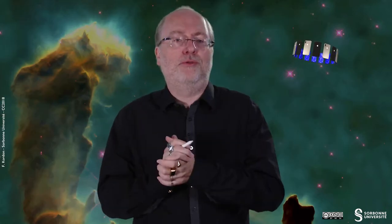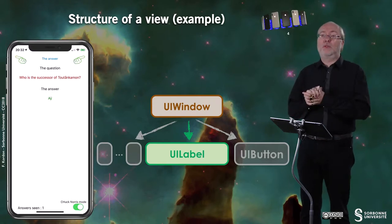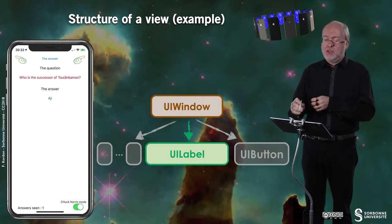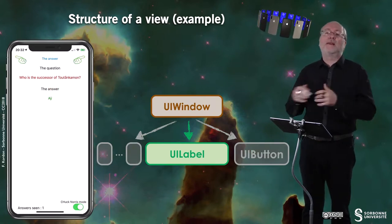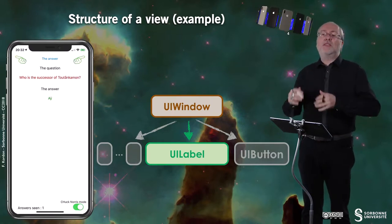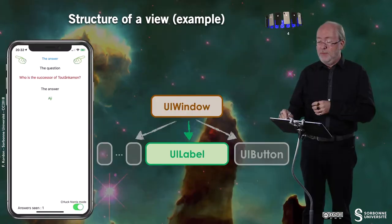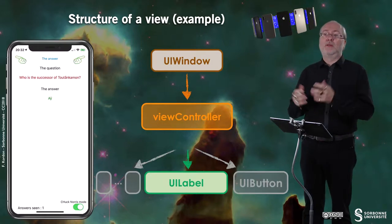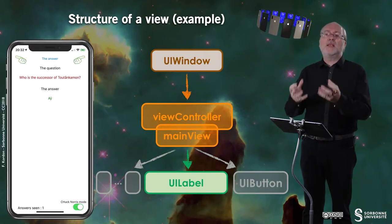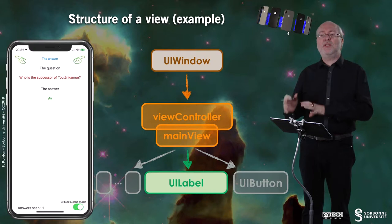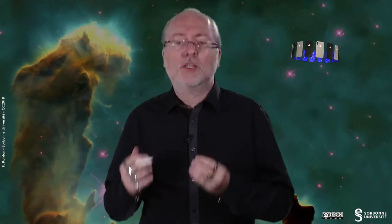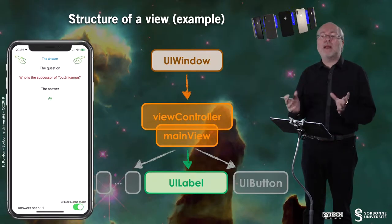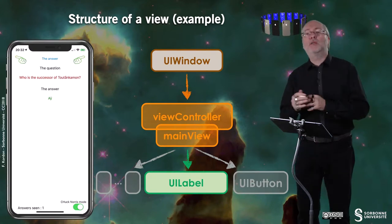Let's look at the structure of a view, using the quiz application as an example. You have a UIWindow object representing the full window. Everything is not directly linked to the UIWindow — programmatically, the view controller refers to a main view, and this main view embeds several sub-views, each with dedicated behavior such as being a button, a label, or a switch. Basically, at the main level of all applications, you associate this couple: view controller plus view.